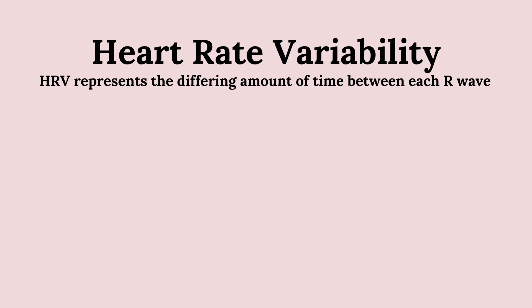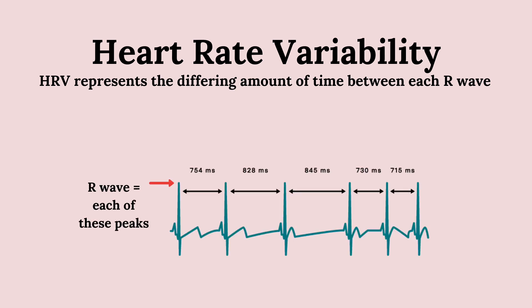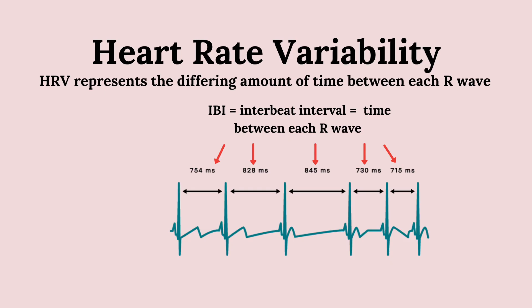So what is HRV? Heart rate variability refers to the variability — the differing amount of time between each heartbeat. To find this information out, we have to record the person's heartbeats or heart rate, but also know how much time is between those beats. For that, we need what's called an inter-beat interval, or IBI.